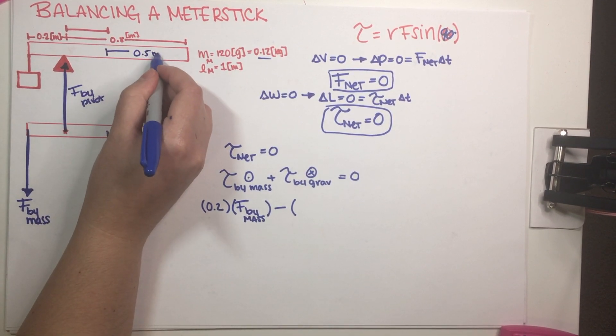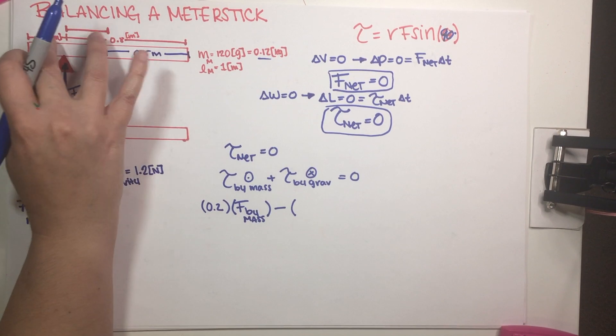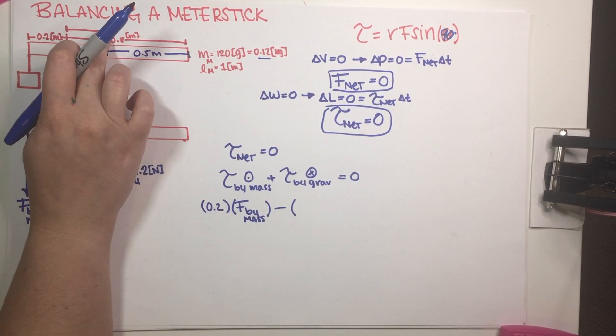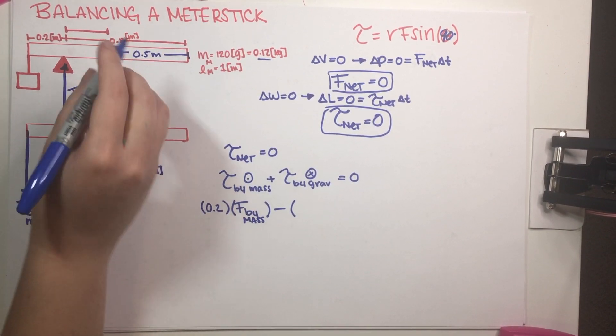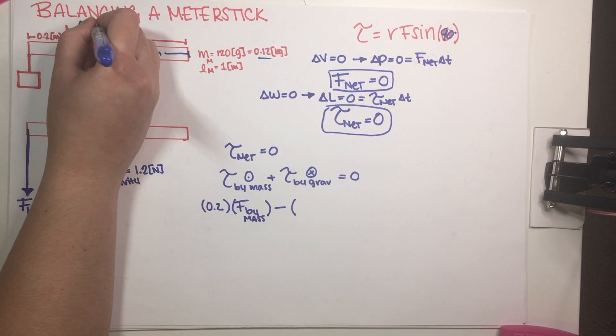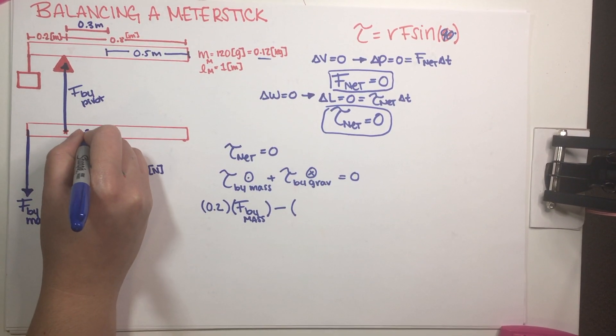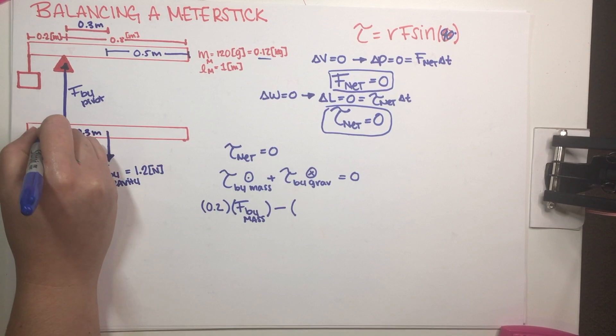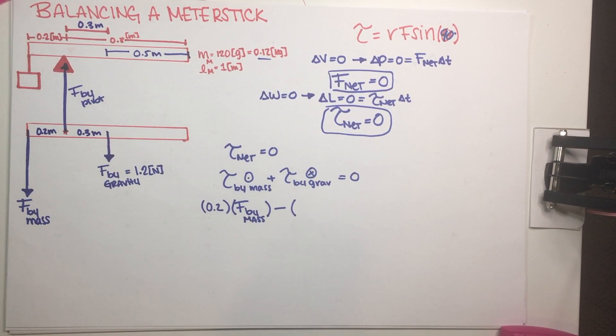then that means that this distance over here has to be equal to 0.3 meters. So this is 0.3 meters, this is 0.2 meters. There we go.